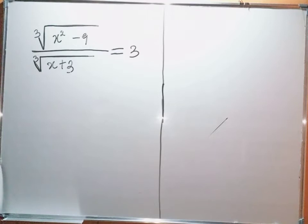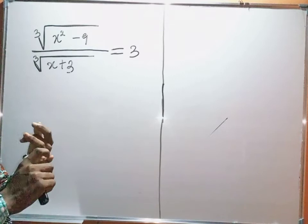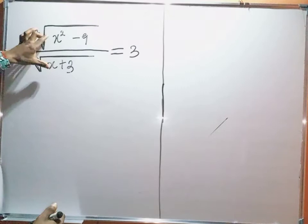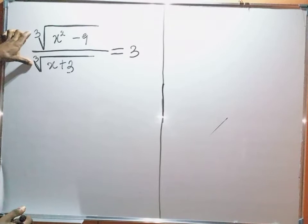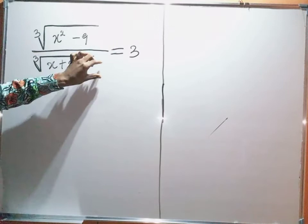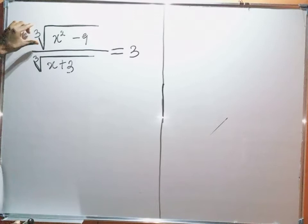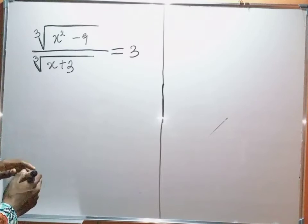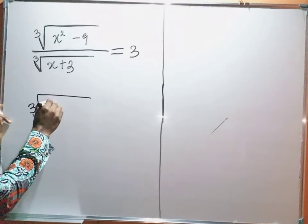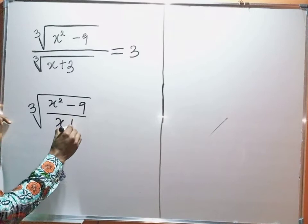So if you can remember the rules of surds, whenever we have a surd expressed under the same root — whether it is separated by multiplication or division — we are permitted to give it the same root. So here, I have the cube root of x squared minus 9 divided by the cube root of x plus 3. They have the same root.